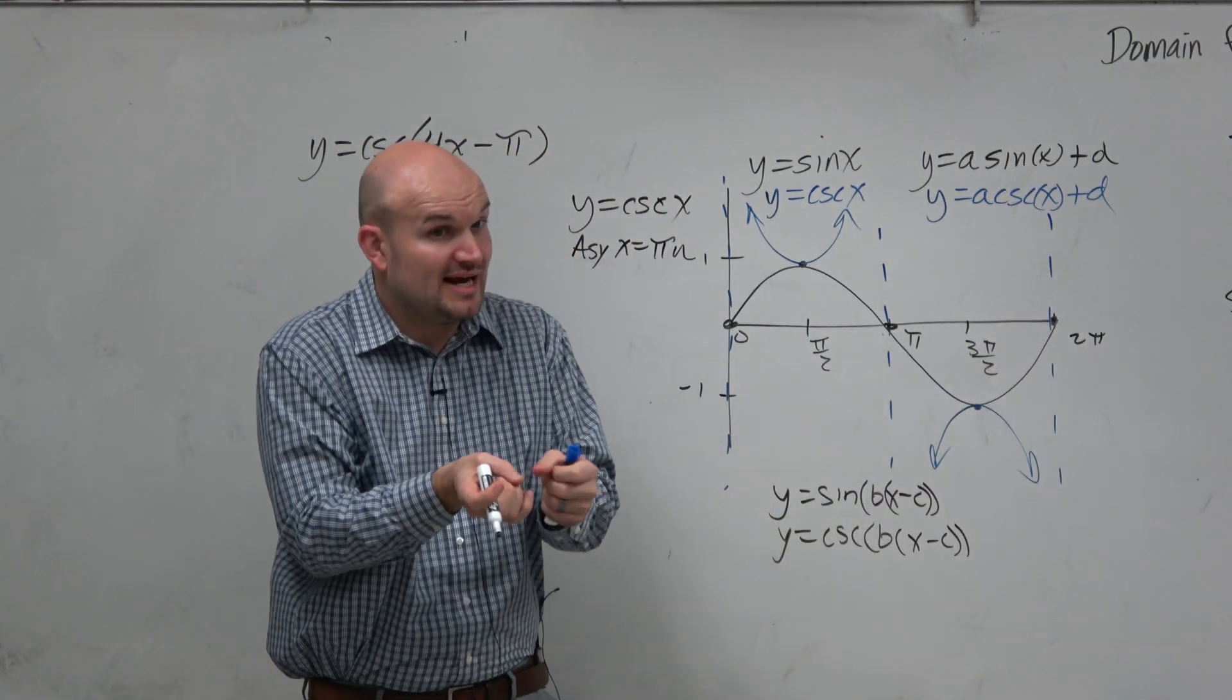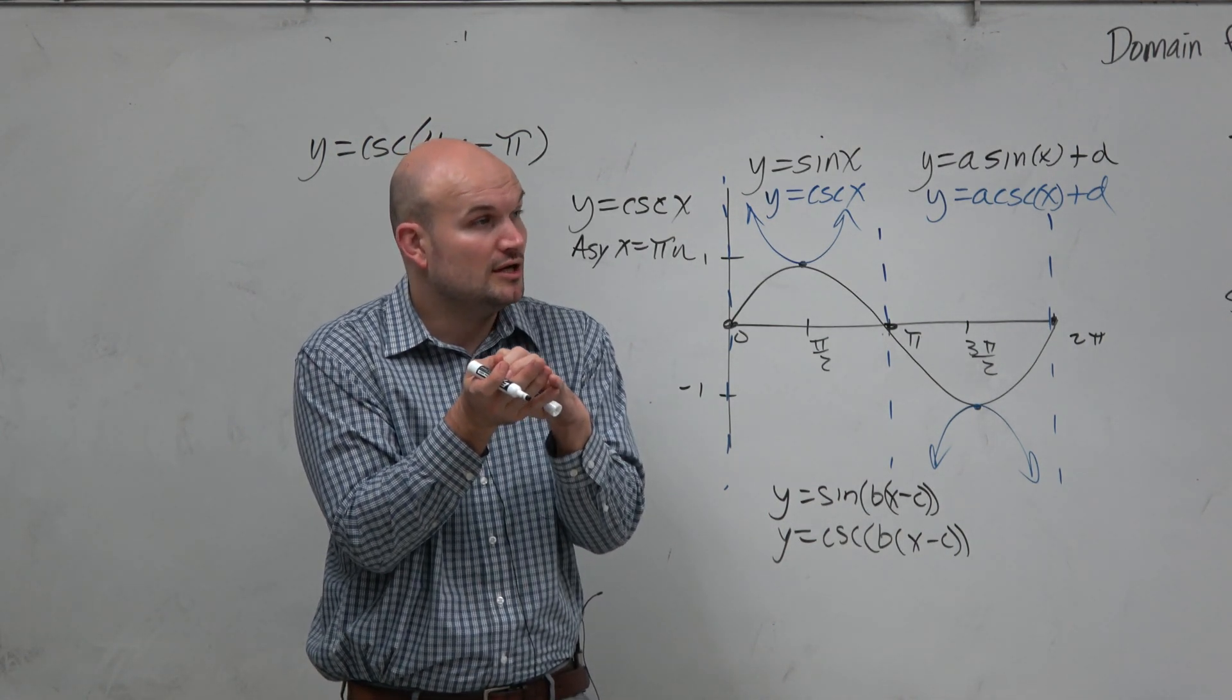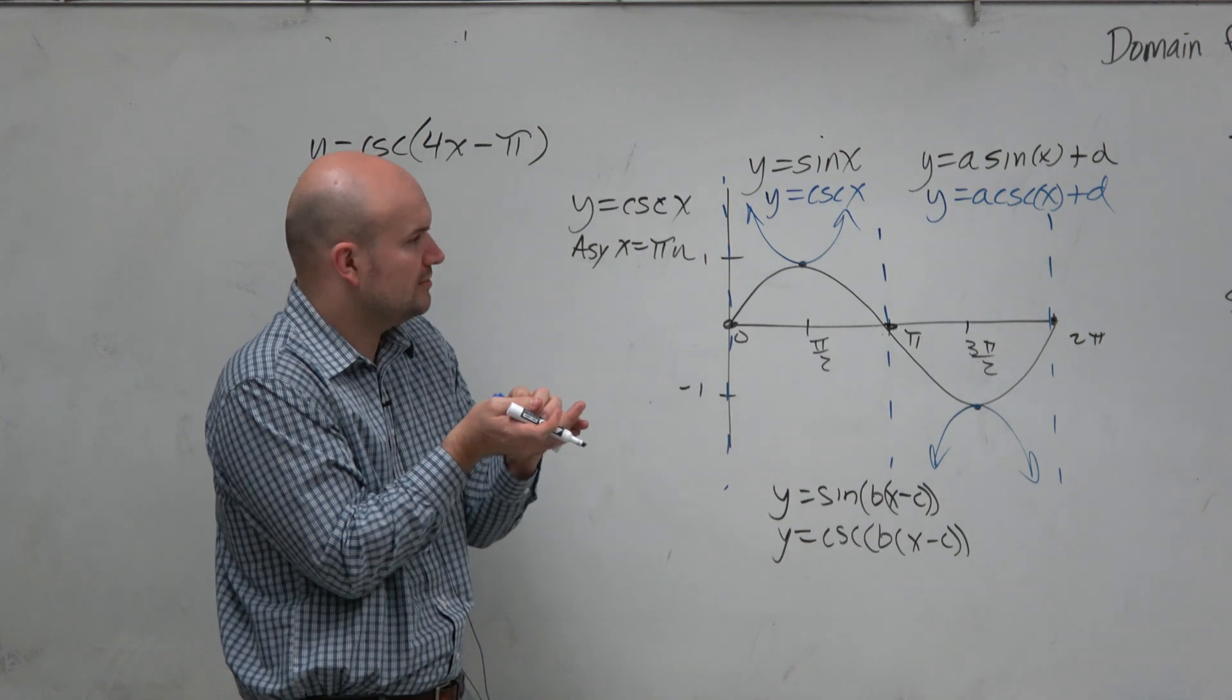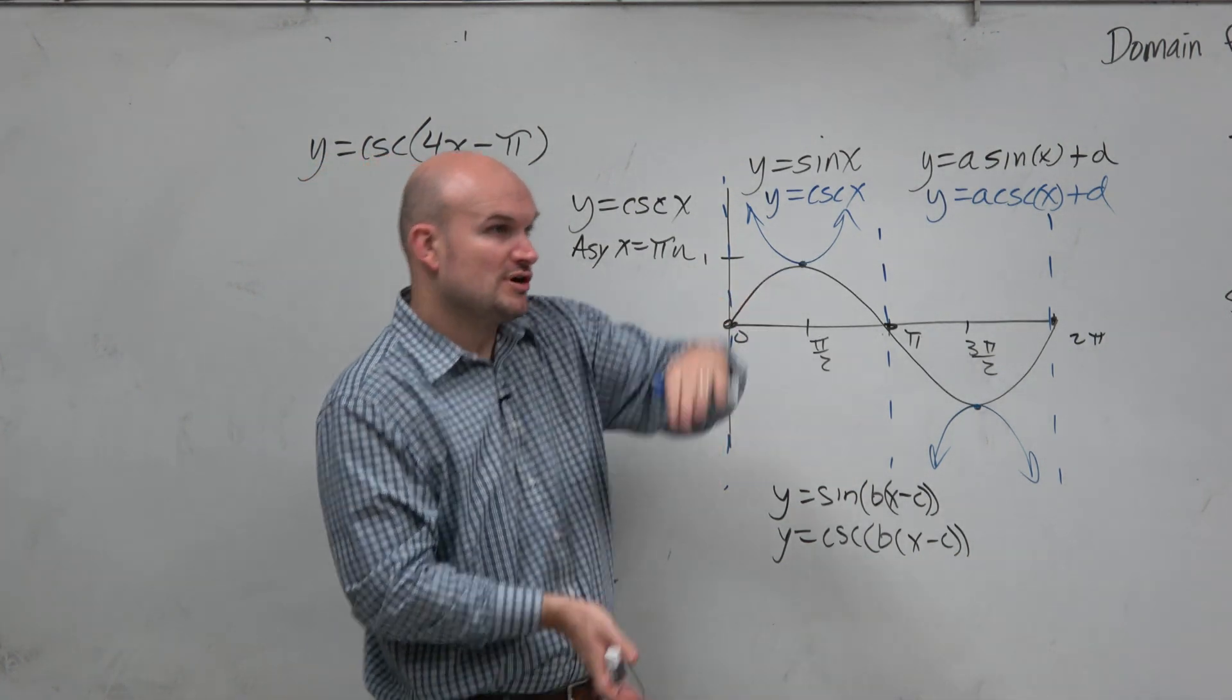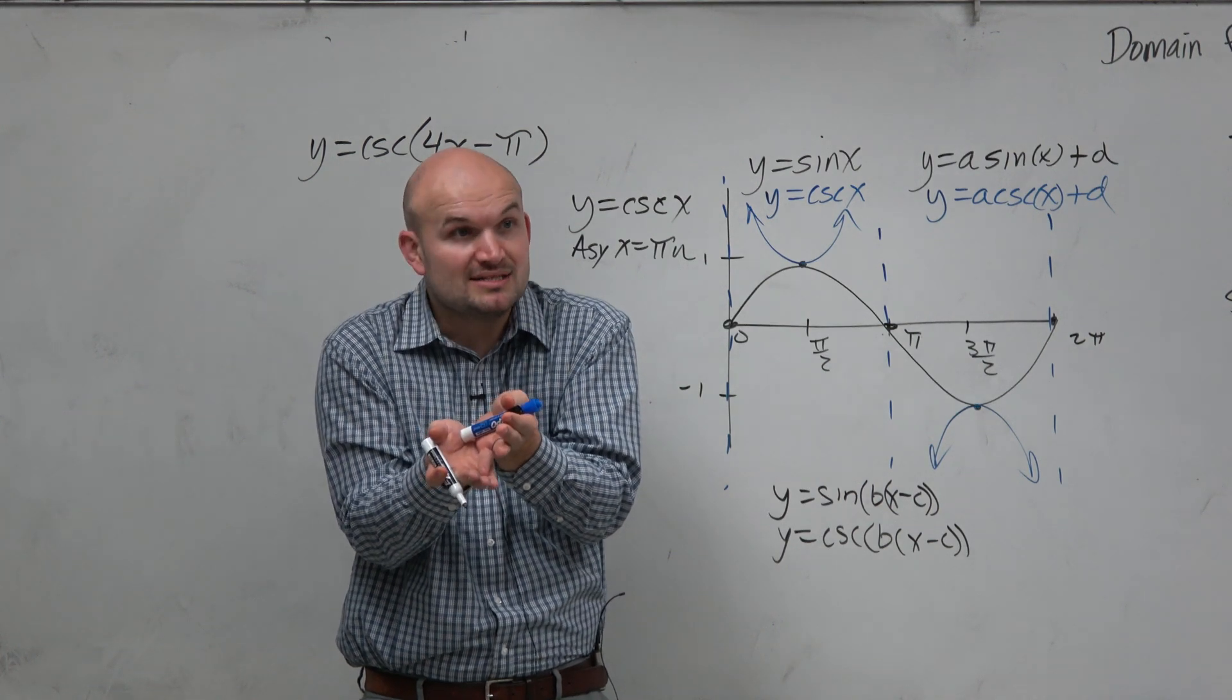Now we talked about it again, guys. If there's transformations outside the function, that's not going to affect the asymptotes or the domain. The domain. Well, yeah, the domain. Right? Because if you're stretching or compressing or moving the graph up or down, that's not going to affect them. Correct?